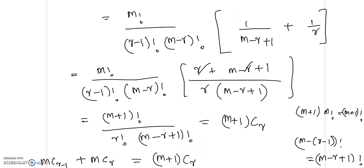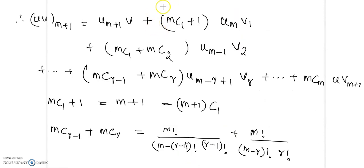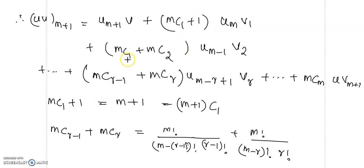Now let us write u^(m+1) v. We have shown that mC1 plus 1 equals (m+1)C1, and mC1 plus mC2 equals (m+1)C2, and (m+1)C2 plus (m+1)C3, and so on. So this gives us the general term in the form (m+1)Cr.